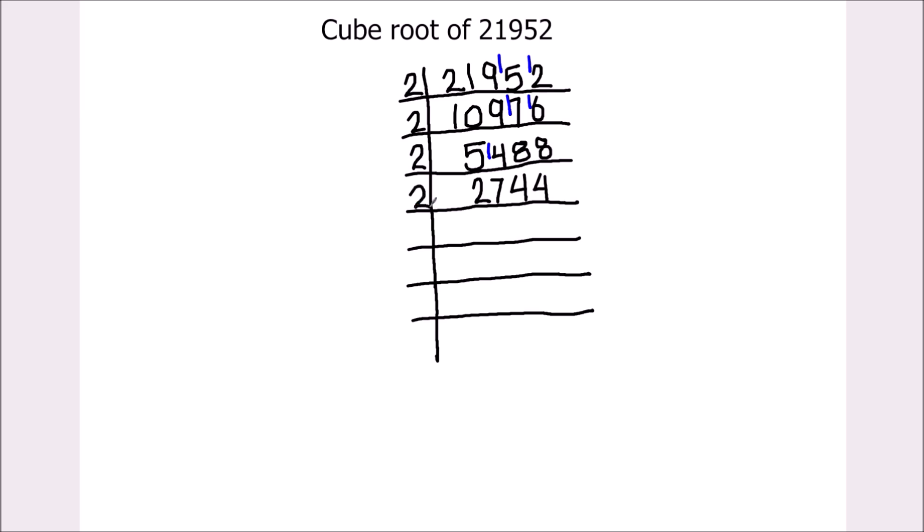Again we can use 2 to divide the number because it is even. 2 times 1 is 2. 2 times 3 is 6. 1 is remainder. This becomes 17. 2 times 8 is 16. This becomes 12. 2 times 6 is 12.